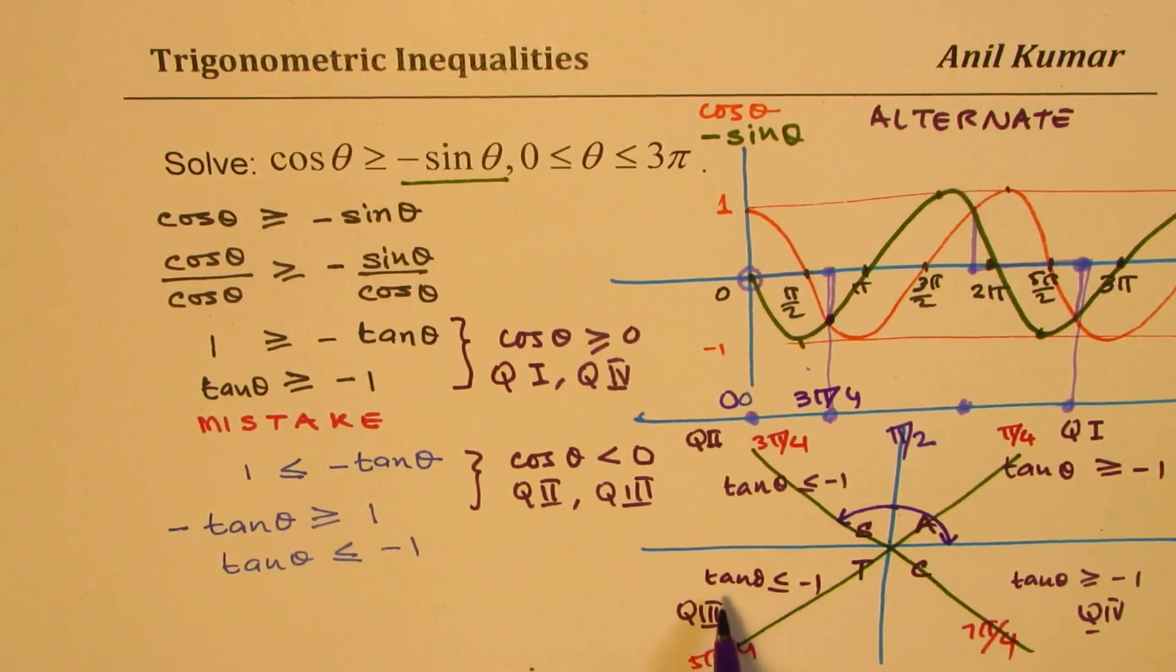Here, we want tan θ to be less than -1, but in this quadrant tan θ is positive. So there is no solution in quadrant 3. In quadrant 4, we want tan θ to be > -1.